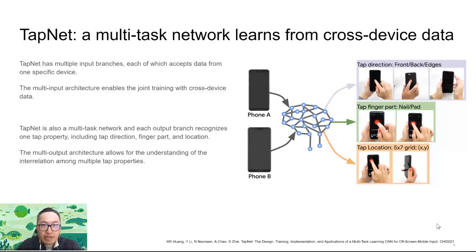TapNet is a multi-task network that learns from cross-device data. It has multiple input branches, each of which accepts data from one specific device. The multi-branch architecture enables joint learning using cross-device data.